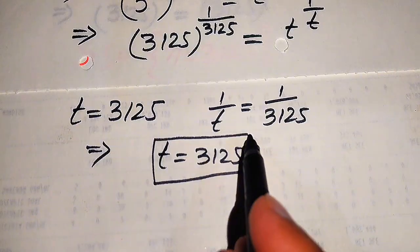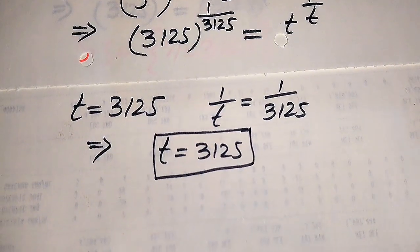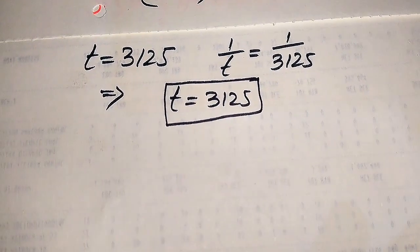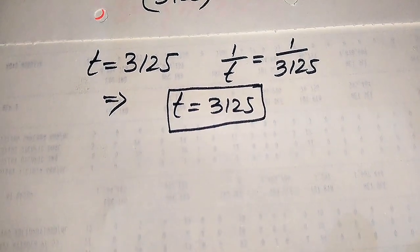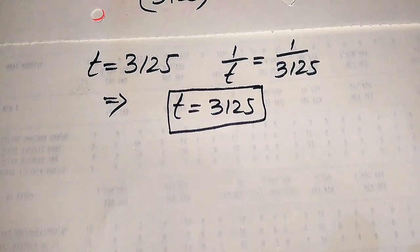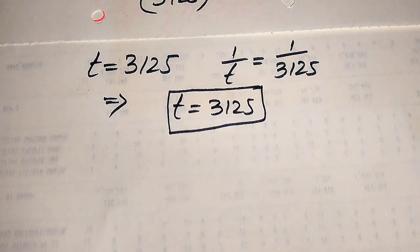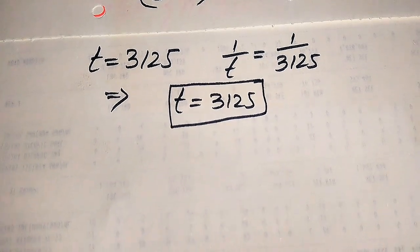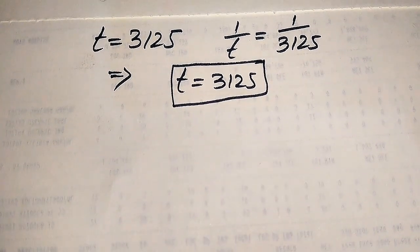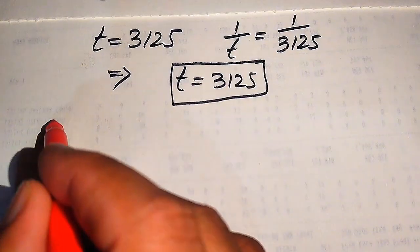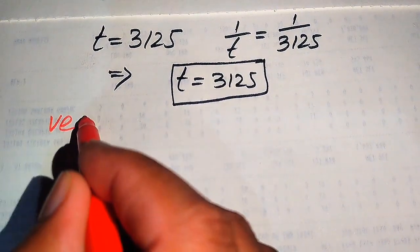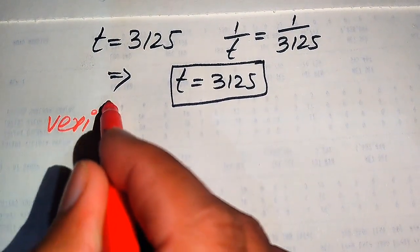So this is the only value of t we obtain. In the next step we need to verify whether this value of t is a solution or an extraneous root.